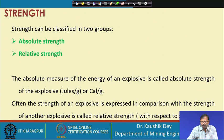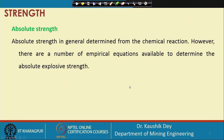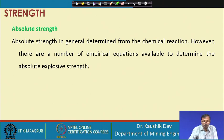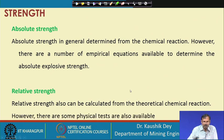When the strength of an unknown explosive is expressed as a proportionate ratio with respect to a base or standard explosive whose strength is known, it is called relative strength. Absolute strength is generally determined from the chemical reaction; however, a number of empirical equations are available. Relative strength can also be calculated from theoretical chemical reactions or measured from physical tests.